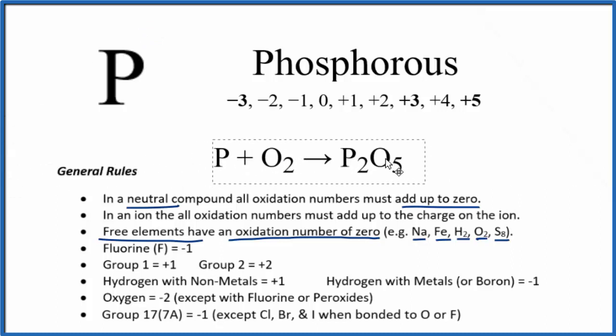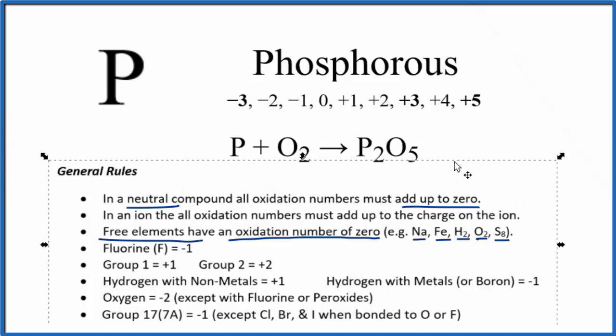But when phosphorus bonds to other elements, we can have different oxidation numbers. Here's an example. We look at this: we have phosphorus by itself as a free element so the oxidation number is zero, same for O₂. This is a free element.